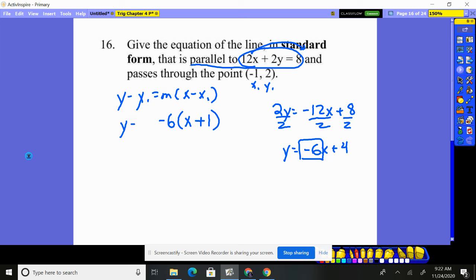y minus, my y₁ is 2. I now distribute my -6 through. So y - 2 = -6x - 6. Add your 2, moving it over.